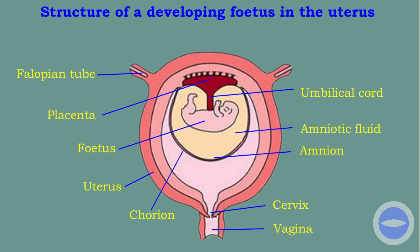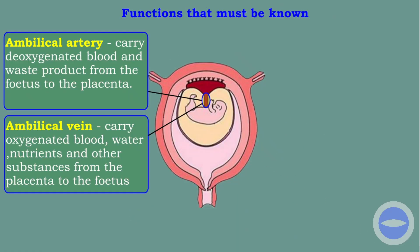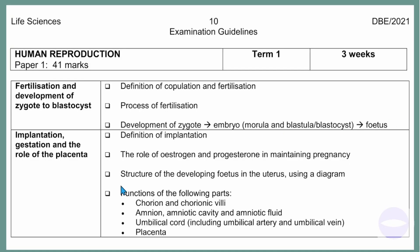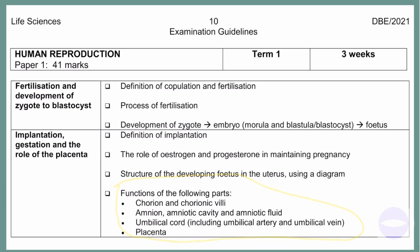Next we discuss the functions. According to the guideline, we must know the function of the following parts: the chorion and chorionic villi, the amnion, amniotic cavity, and amniotic fluid, the umbilical cord including the umbilical artery and umbilical vein, and the function of the placenta. These are the functions the examiner wants us to know.